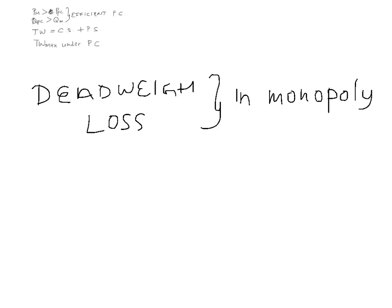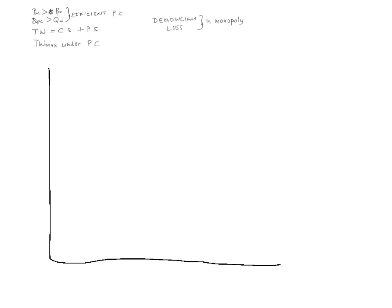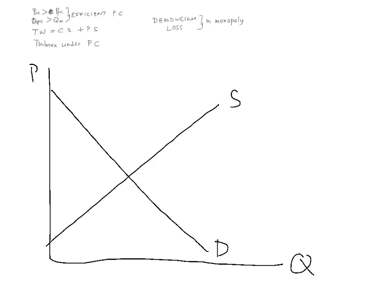We can draw a graph with a demand curve and a supply curve — or marginal cost curve when we look at monopoly. From this we identify the perfect competition outcome: where demand equals supply. Output will be QPC and price will be PPC.